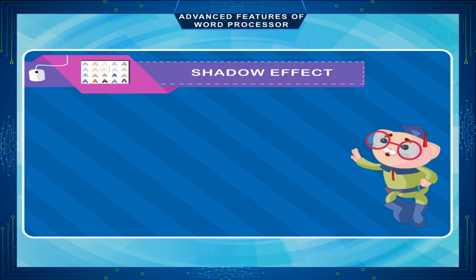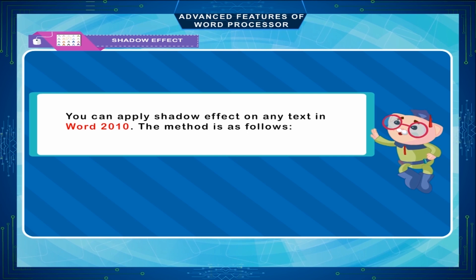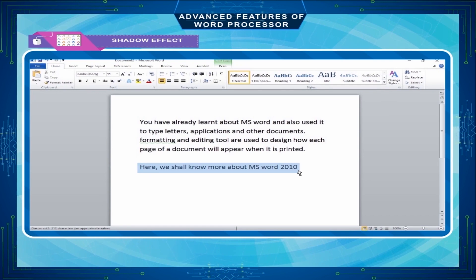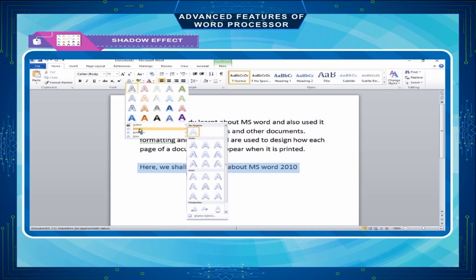Shadow Effect. You can apply shadow effect on any text in Word 2010. The method is as follows. Select the text on which you want to apply shadow effect. Click on the text effects button. A pop-up box will open up. Click on Shadow. You will see different types of shadow from which you can select any one to apply on your text.